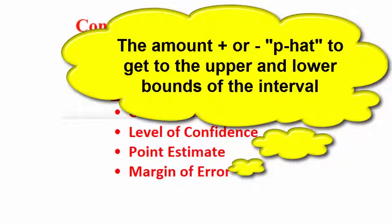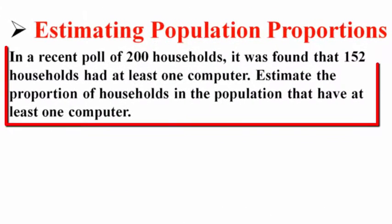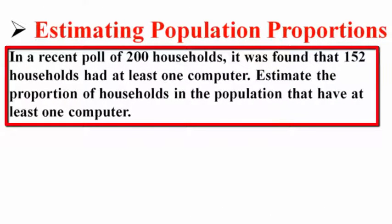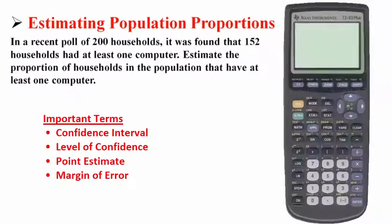We are going to use the TI-83 to do a problem. In a recent poll of 200 households, it was found that 152 households had at least one computer. Estimate the proportion of households in the population that have at least one computer.